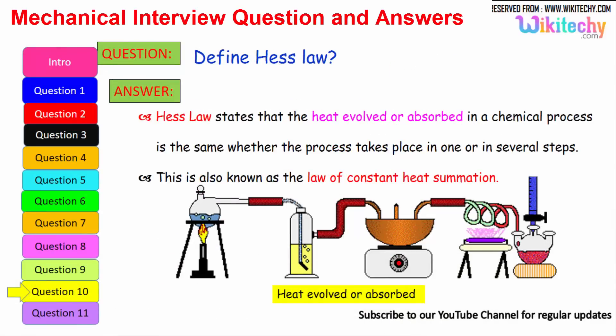Define Hess's law. This is one of the very important questions. In case of generating heat between an object in emissions, Hess's law states that the heat evolved or absorbed in a chemical process is the same whether the process takes place in one or in several steps. This is also known as the law of constant heat summation.